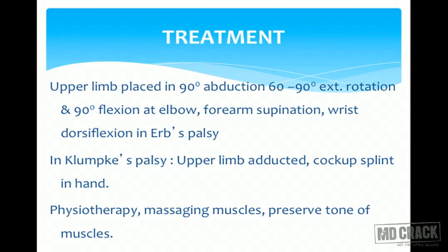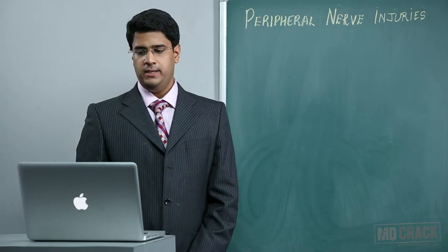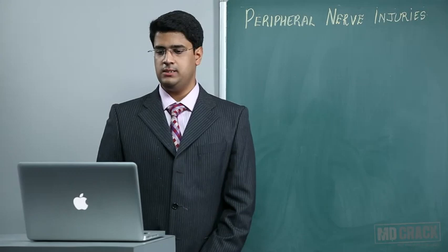In Klumpke's paralysis, the upper limb is adducted and a cock-up splint is given for the hand. The cock-up splint is usually given on the volar aspect. Physiotherapy is important, and massaging the muscles and preserving tone is essential for recovery.